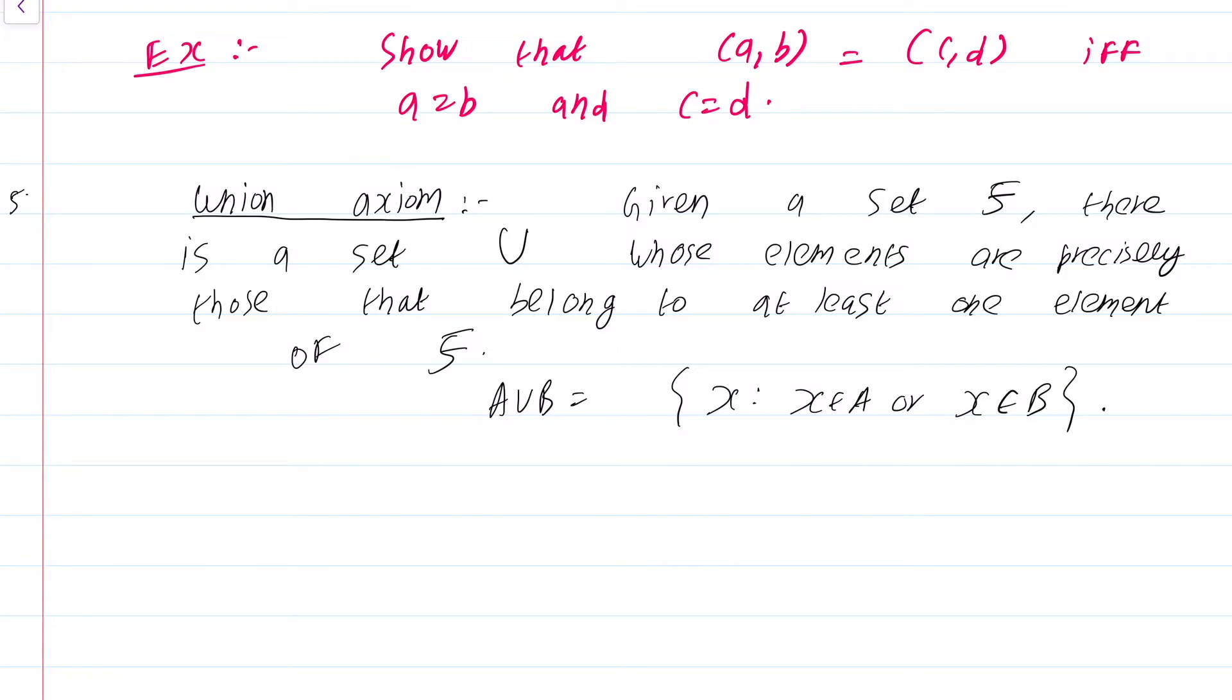Now, recall from our naive discussion of unions and intersections that I had defined the union of two sets A union B as x such that x is in A or x is in B. But this definition has a problem simply because the property that I am using to define the union, it is not clear what set it is defined on. Property should always be defined on a set and it is not clear which set this is defined on. This is not really a problem because the union axiom just says that whatever set you take, you can consider another set whose elements are precisely the elements of the elements of f.